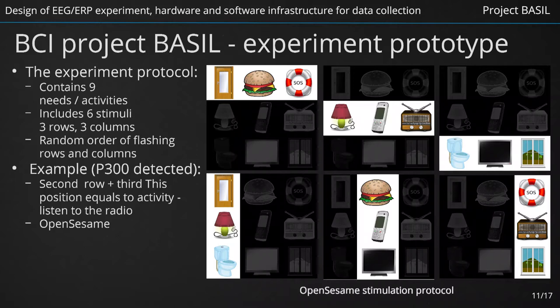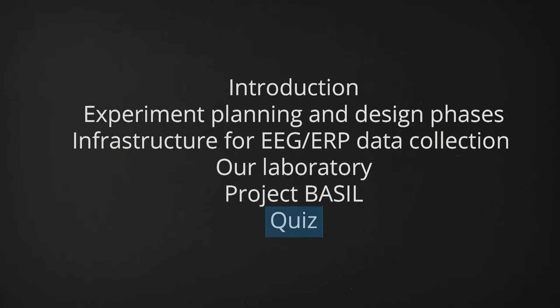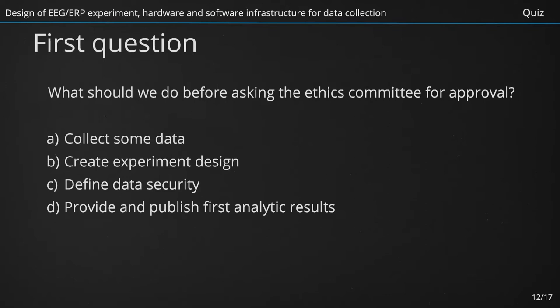With the infrastructure used within the BASIL project, we are approaching the end of this part of our tutorial. Now it's time for a short quiz — more than one answer can be correct. What should we do before asking the ethics committee for approval? A: Collect some data. B: Create experiment design. C: Define data security. D: Provide and publish first analytic results. The right answers are B and C.